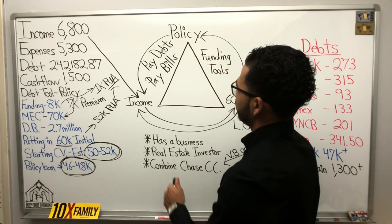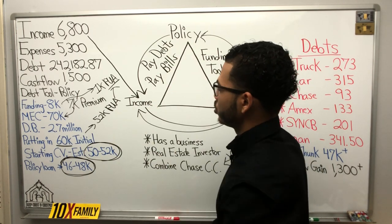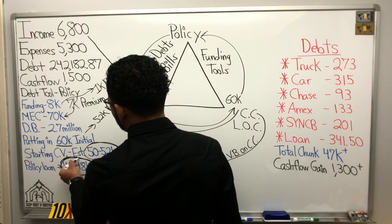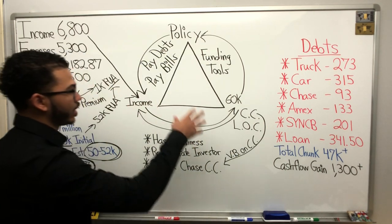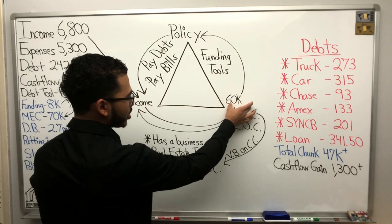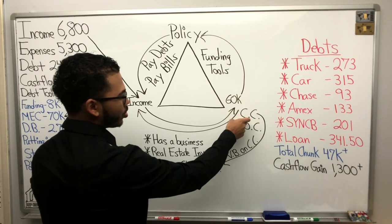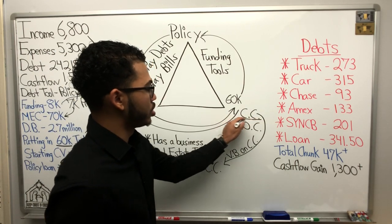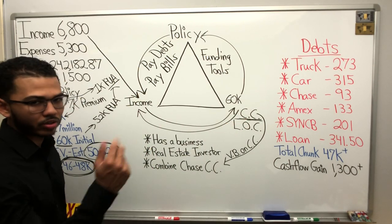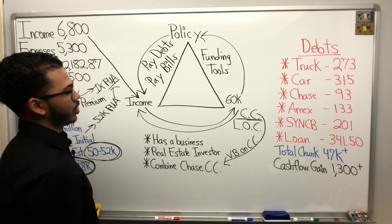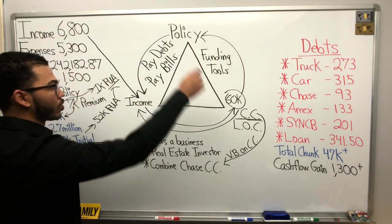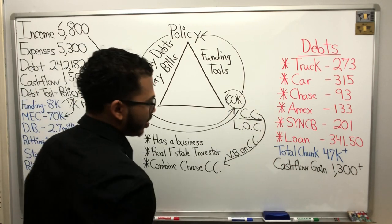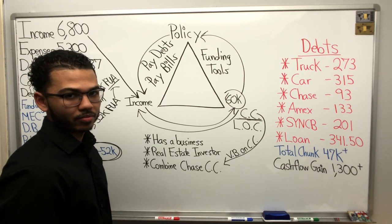The policy is going to be the tool that allows this gentleman to do velocity banking without a line of credit or a credit card. We take out a policy loan, and here is the strategy: income comes in, lump sum of cash goes into the policy, we borrow it back out into our income to pay debts and bills. Credit cards and a line of credit are still desired tools we want to acquire — he does have credit cards, just not the line of credit yet, but as a business owner and real estate investor he'll get there.